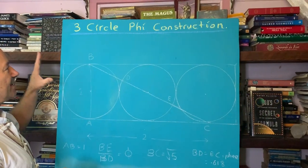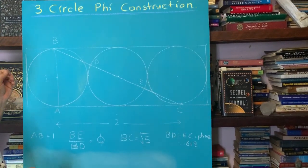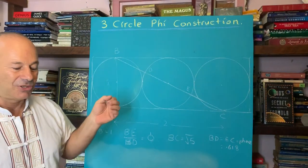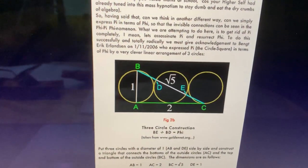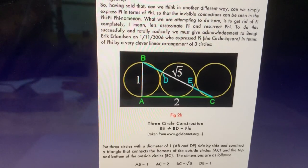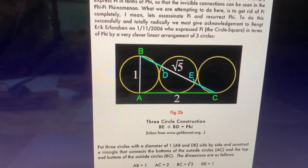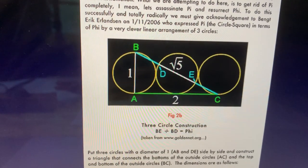I'm going to create a three-circle tangent to each other. They're all going to be on the line. But I'd like to give tribute to Banked Eric Erlanson in 2006, who submitted this three-circle Phi construction to goldennumber.net, one of my favorite websites on the golden ratio, where they've acknowledged the 108 discoveries.